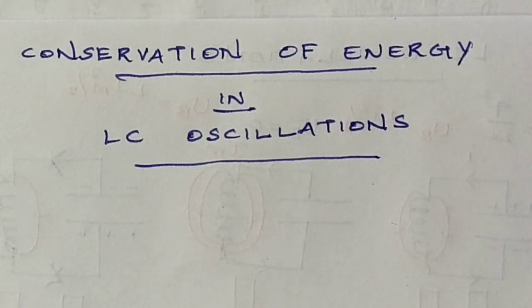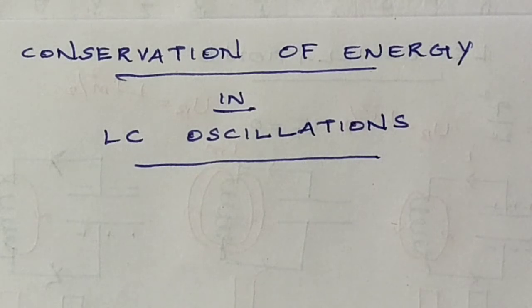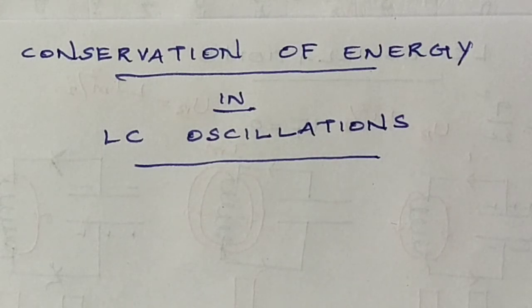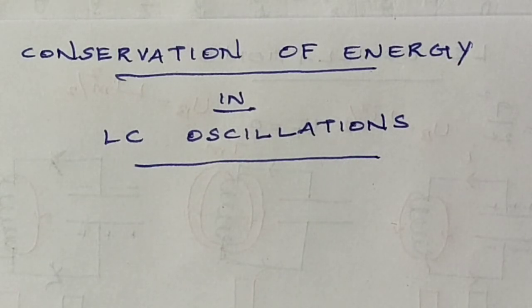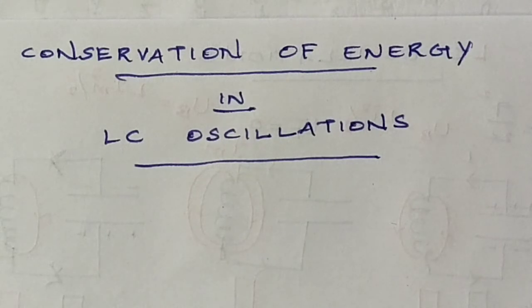Moving to the conservation of energy in LC oscillation. During LC oscillation in an LC circuit, the energy of the system oscillates between the electric field of the capacitor and the magnetic field of the inductor. Because the energy oscillates between the capacitor and the inductor, the energy is moving, so the electric and magnetic fields vary with time. But the total energy remains constant.